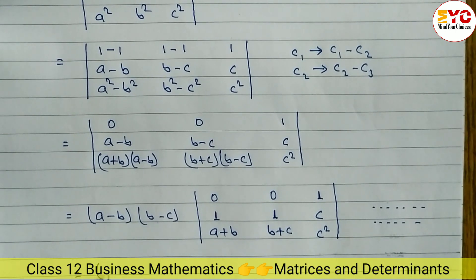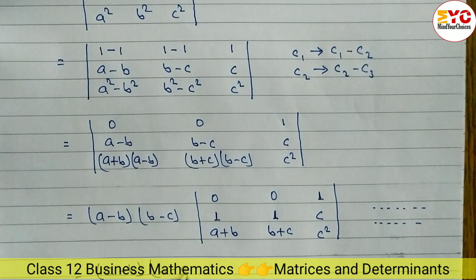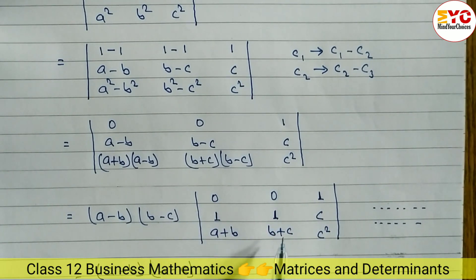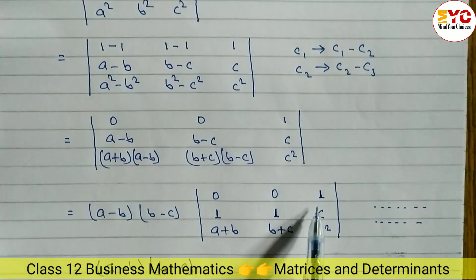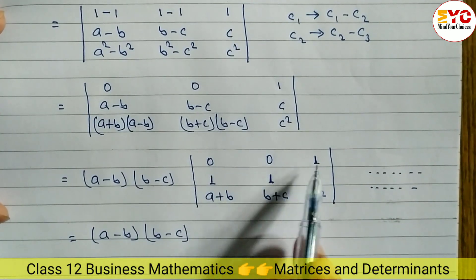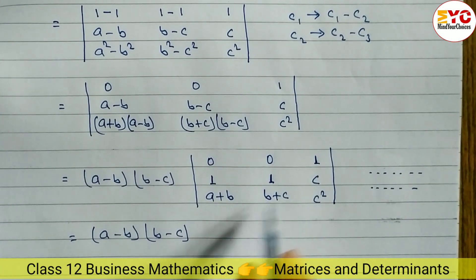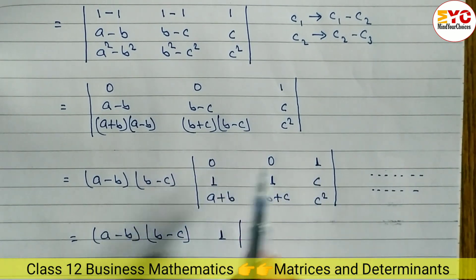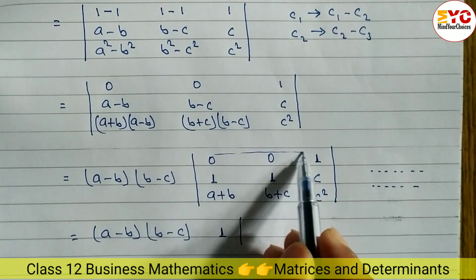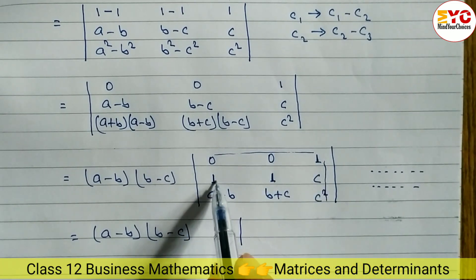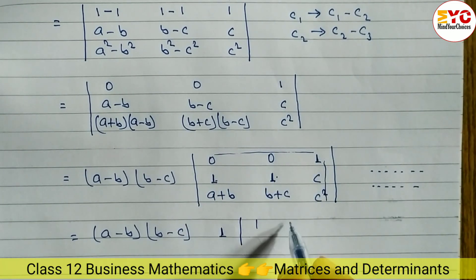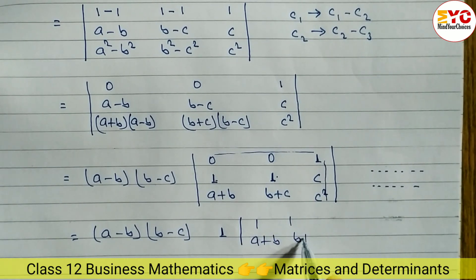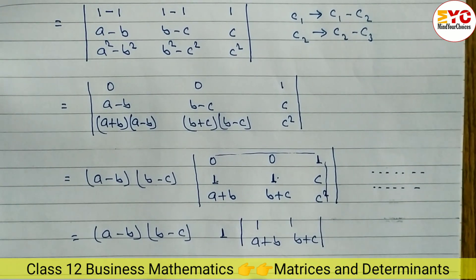Now we have A minus B times B minus C outside. We need to find the value of the 3x3 determinant. Since there are two zeros in the first column, we expand along column 1 — taking only the last element (1 in the first row, positive). The minor of 1 excludes its row and column, leaving the 2x2 matrix: 1, 1; A plus B, B plus C.